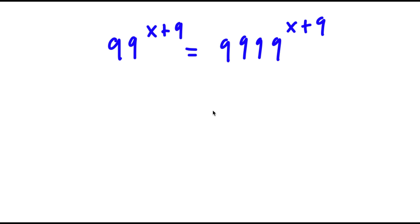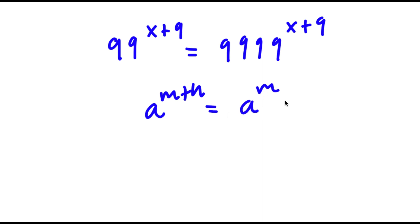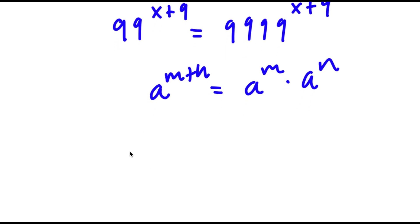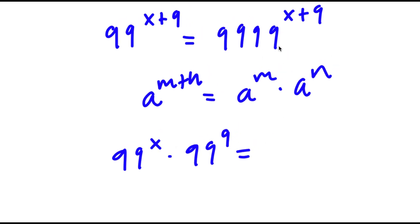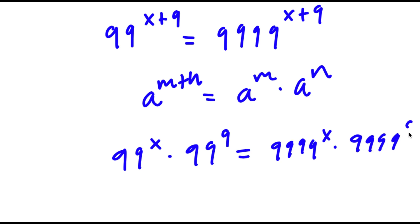In this problem, I have 99 to the power of x plus 9 is equal to 9,999 to the power of x plus 9. To solve this, I'm going to use the property that a to the power of m plus n equals a to the power of m times a to the power of n. So 99 to the power of x plus 9 equals 99 to the power of x times 99 to the power of 9. And 9,999 to the power of x plus 9 equals 9,999 to the power of x times 9,999 to the power of 9.